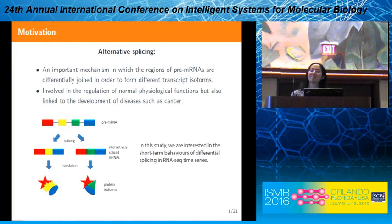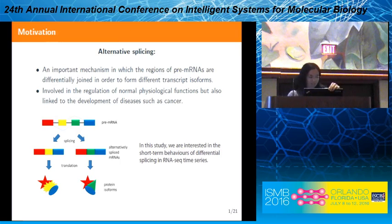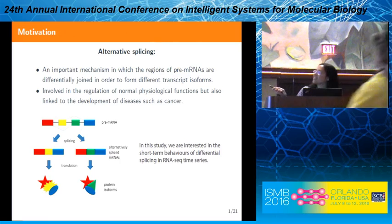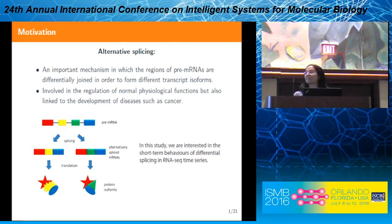I would like to start with the definition of alternative splicing. As most of you might already know, it is a very important mechanism in which regions of pre-mRNAs are joined differentially. Different parts of pre-mRNAs are combined so that they form alternatively spliced mRNAs, which are later translated into different proteins. These different proteins have different functions in living organisms.